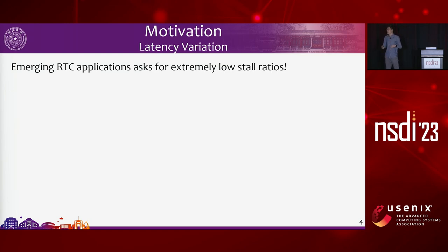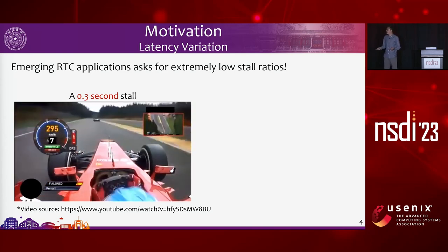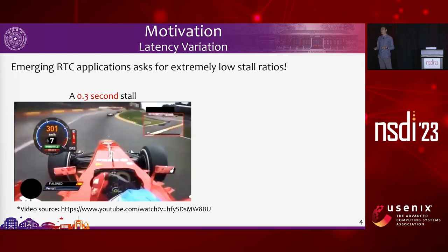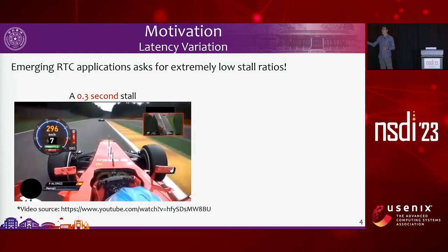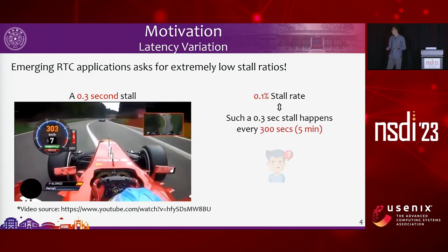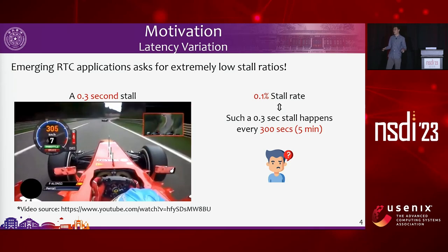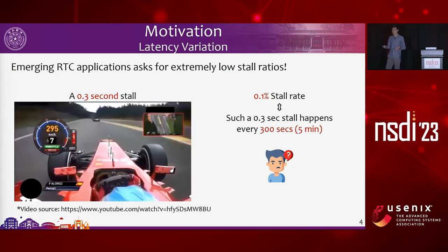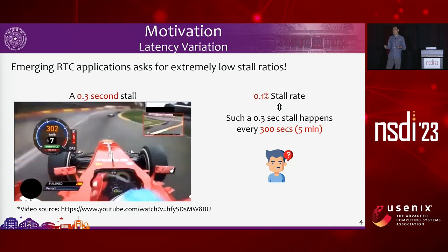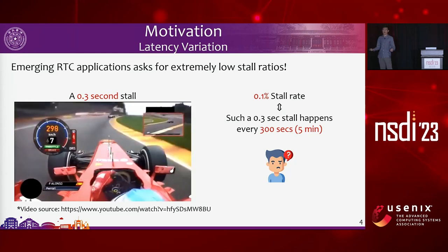Another important feature of emerging RTC applications is they ask for extremely low tail latency or low stall ratios. A stall is illustrated with a video clip of a race car — even a 0.3-second stall is very fatal for cloud gaming or VR control. When the stall rate is as low as 1 in 1,000, a 0.3-second stall can still happen every 300 seconds. No one wants such a stall every five minutes, and for future applications like remote surgery, this can be even fatal.